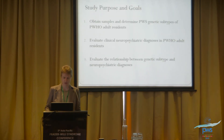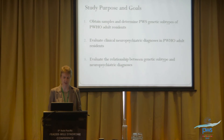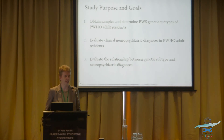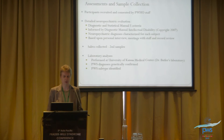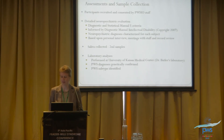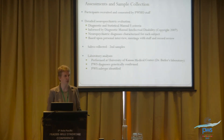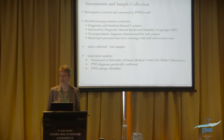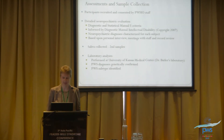The study had three goals: to obtain samples and determine genetic subtype; to evaluate clinical neuropsychiatric diagnoses; and to evaluate the relationship between genetic subtype and neuropsychiatric diagnoses. Participants were recruited and consented; detailed neuropsychiatric evaluations were completed. Diagnoses were made using DSM-5 criteria, also informed by the Diagnostic Manual for Intellectual Disability. Neuropsychiatric diagnoses were characterized for each subject based on personal interview, meetings with staff, and extensive review of records.